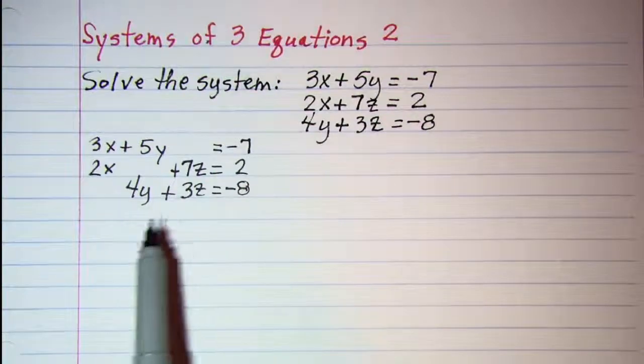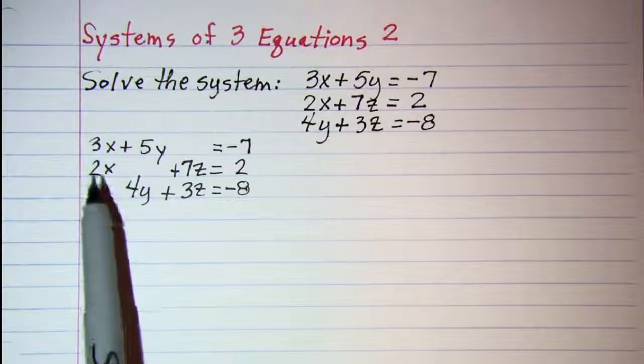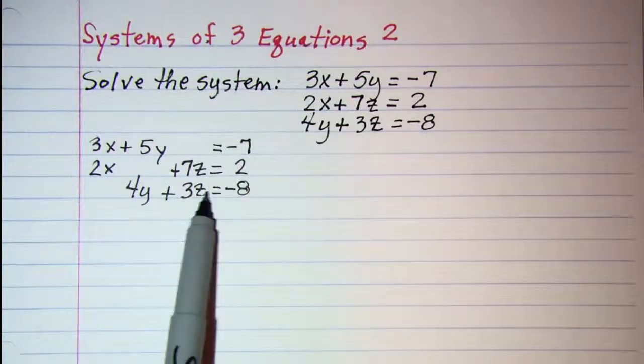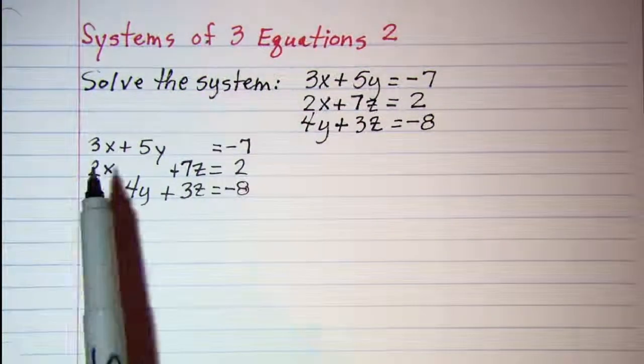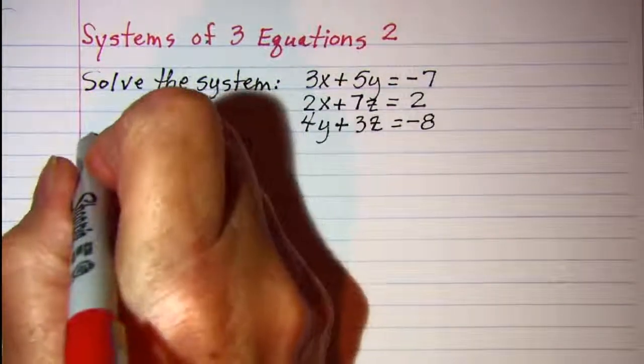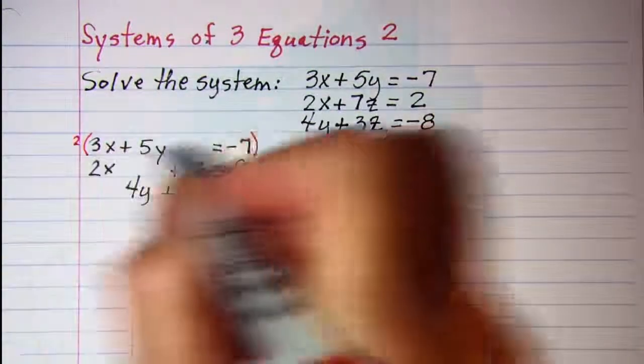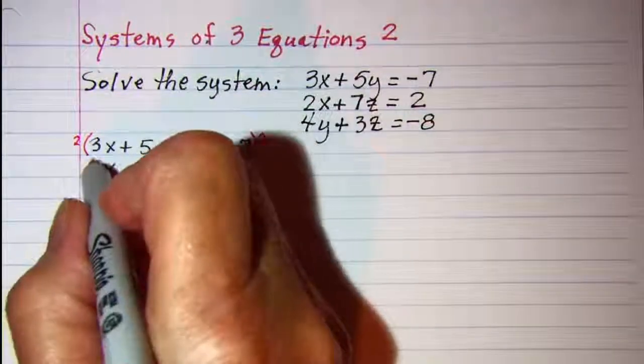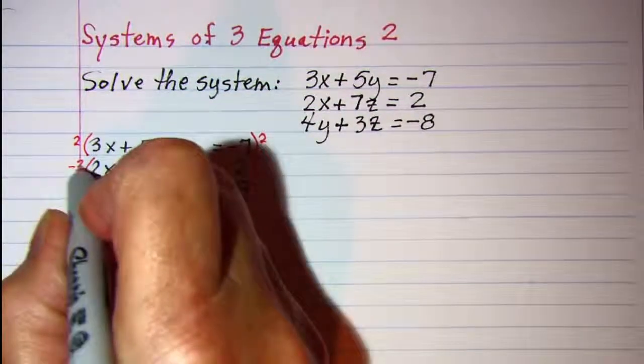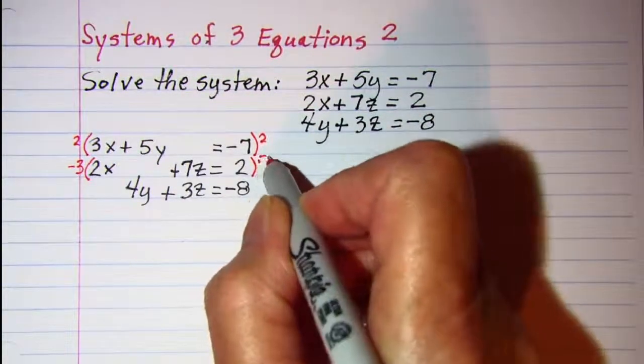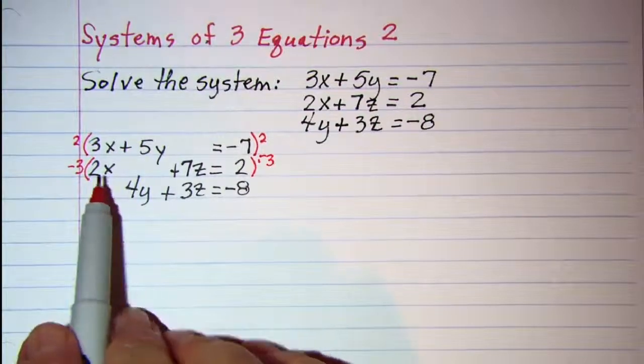Now I'm going to eliminate x. It's already eliminated from this equation, so I'll take the first two equations and eliminate x. I'll multiply this equation by 2 and this equation by -3, so that this will be 6x and this will be -6x.